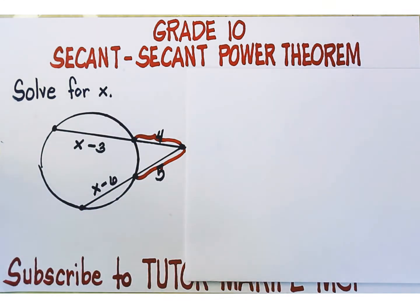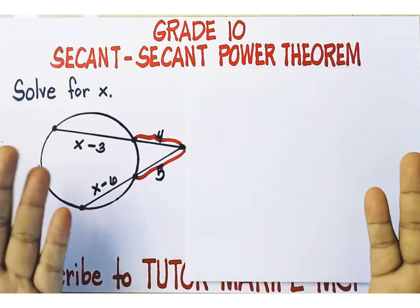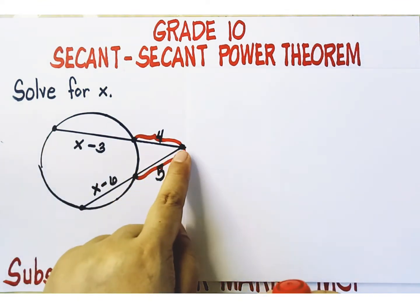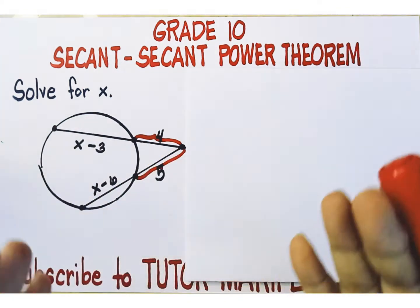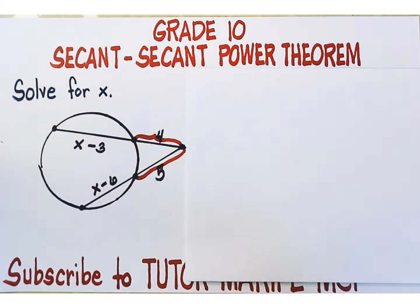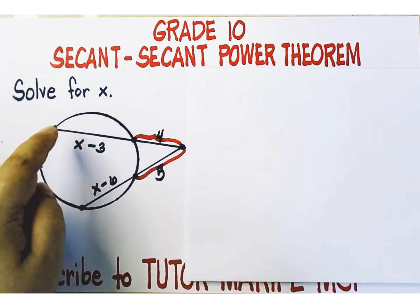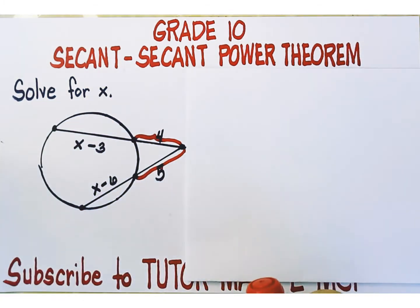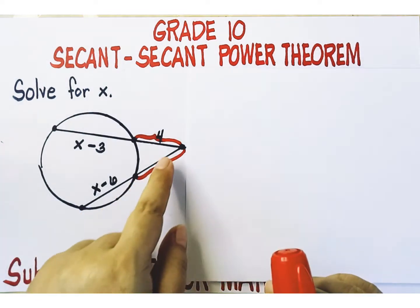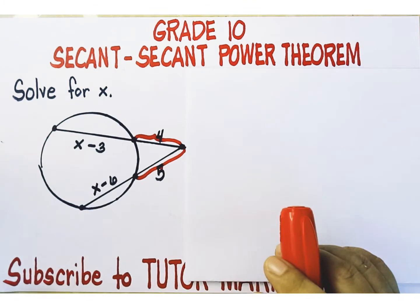What does the secant-secant power theorem state? It states that when two secant segments are drawn from an external point to the circle, the product of the measures of one secant's external part and that entire secant is equal to the product of the measures of the other secant's external part and that entire secant.